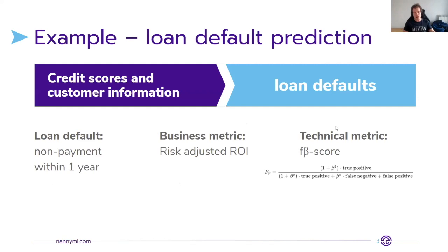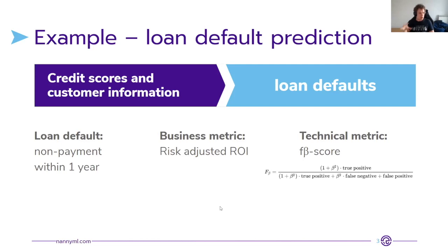Let's start with an example I'll use throughout the presentation. Imagine you're a data scientist at a big bank with 30 million clients, and the biggest product line is long-term mortgage loans. You work on a core ML model for credit default prediction — taking credit scores and customer information to predict whether someone will default. Loan default is defined as non-payment over one year, so the true label isn't known immediately.